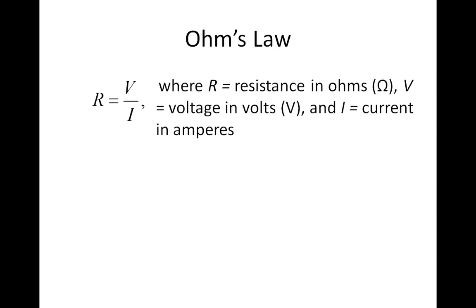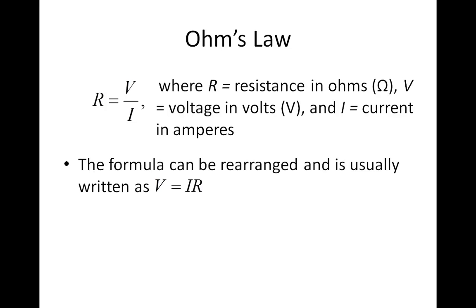The relationship can be shown mathematically by the equation R equals V over I, where R equals resistance in ohms, V equals voltage in volts, and I equals current in amperes. The formula can be rearranged, and is usually written as V equals IR.